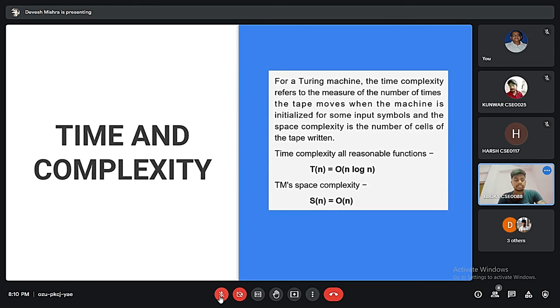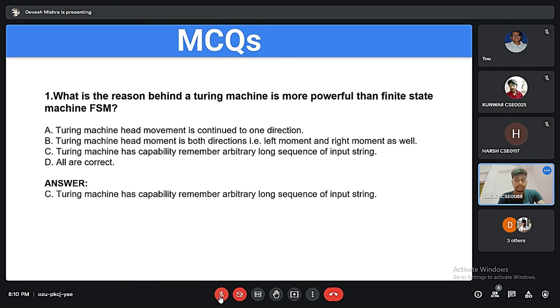Now I'm going to discuss MCQ questions. The first is: what is the reason behind the Turing machine being more powerful than finite state machine? Here we can say that the Turing machine has the capability to remember arbitrary long sequences of input string.